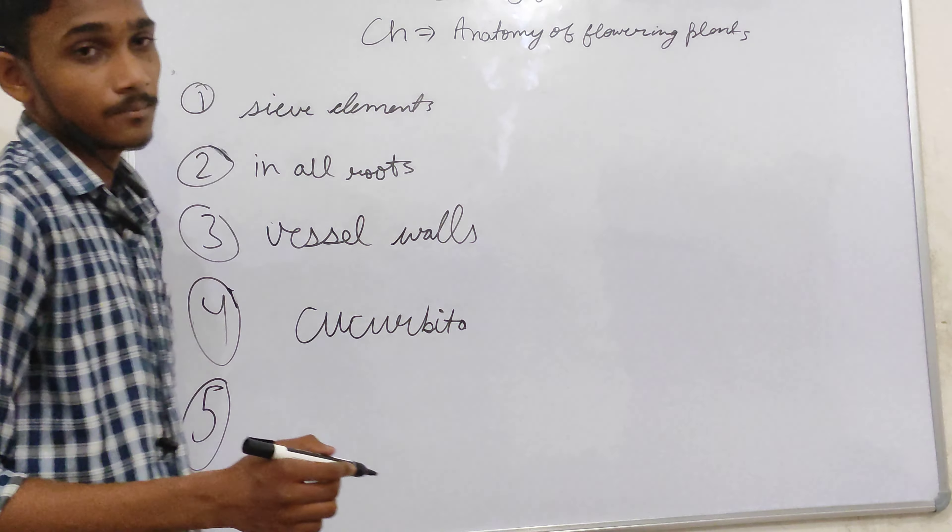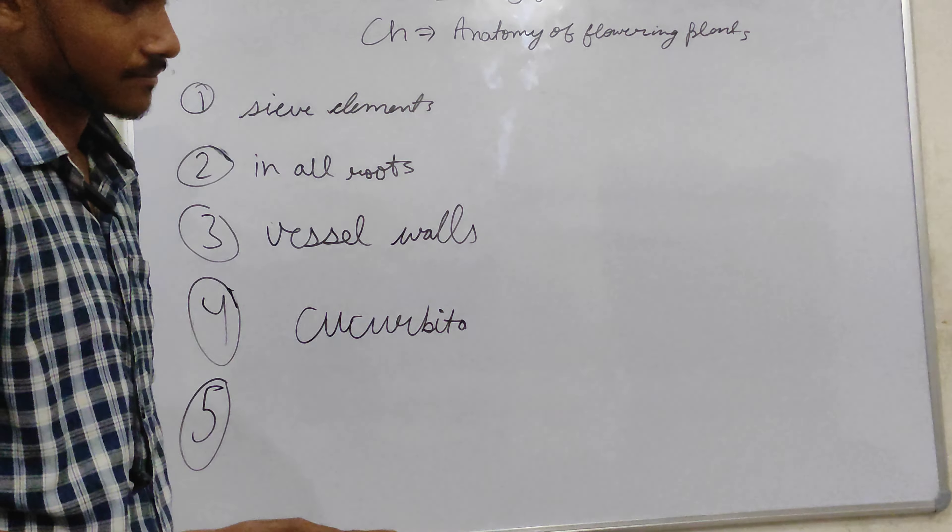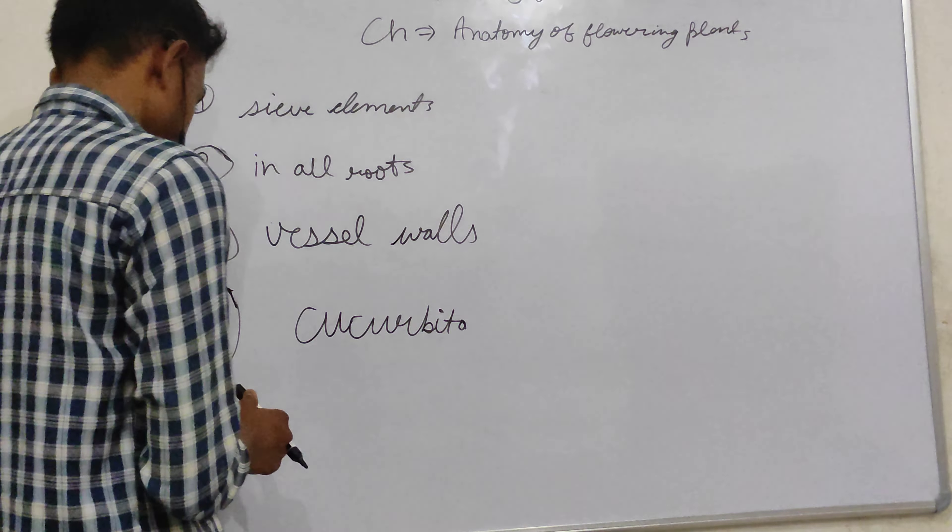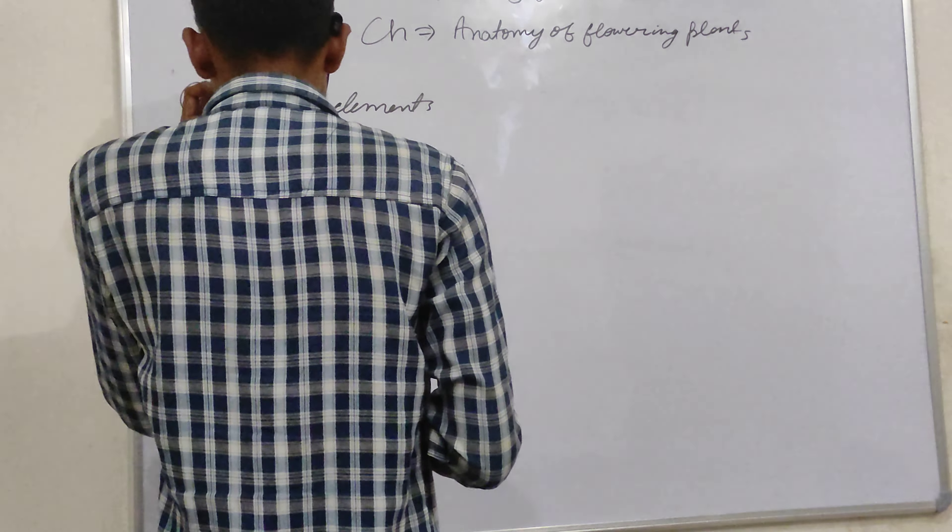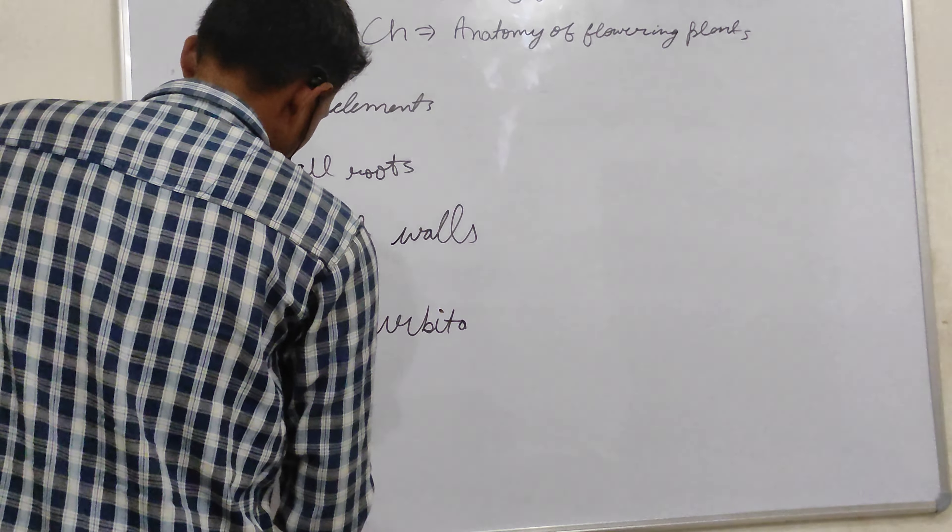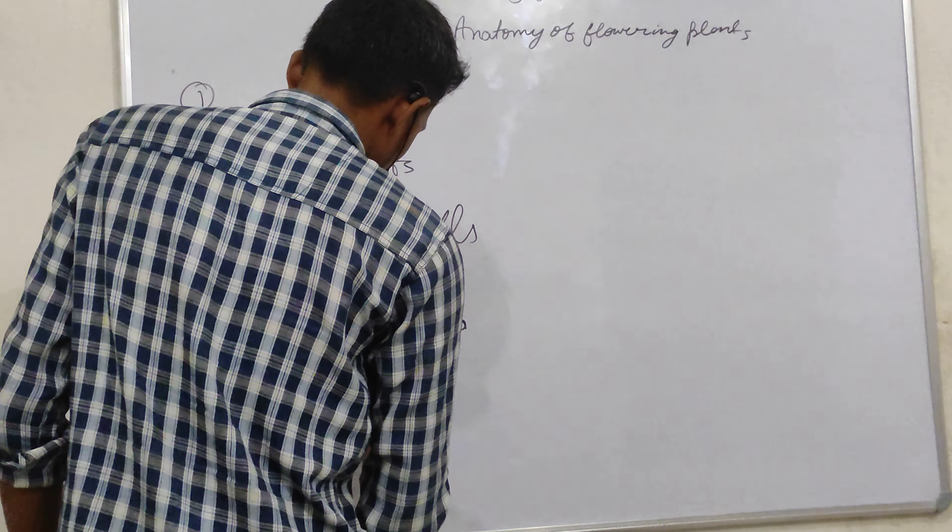The quiescent center theory is concerned with root apex, shoot apex, root cap, and secondary growth.